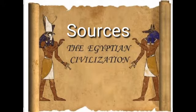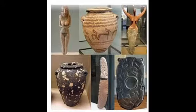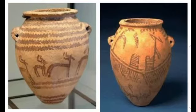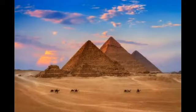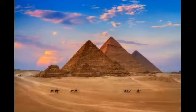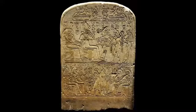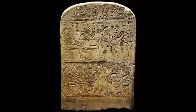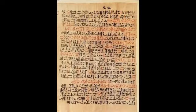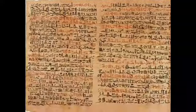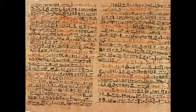Now let's see the sources of the Egyptian civilization. Our knowledge about the ancient Egyptian civilization is based on archaeological excavations, inscriptions and official documents. They have helped us to reconstruct the history of the Egyptian civilization.